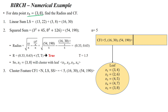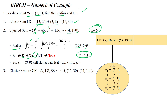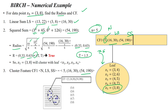We add the fifth data point X5 at (3, 8). We calculate the linear sum and squared sum using existing values and the new data point. With 5 data points, applying the radius formula gives (0.33, 0.63). Both values are less than 1.5, satisfying the condition. So X5 is added into the same leaf node. CF1 is updated: n = 5, linear sum = (16, 30), squared sum = (54, 119).